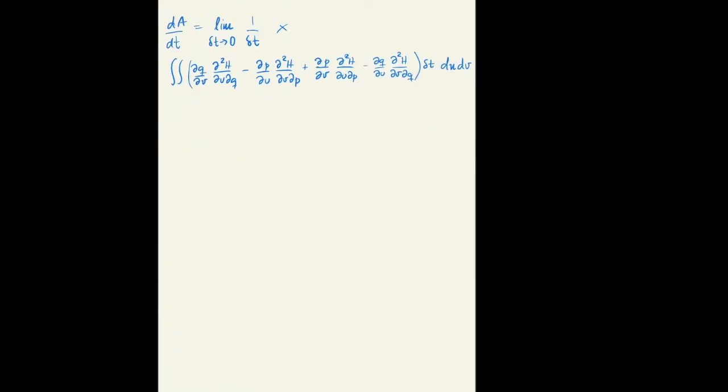Now we substitute the Jacobian at time T prime. This is the expression that you have for the area. Now the delta T cuts on both sides and then you get rid of the limit. Now we can prove that what is in this parenthesis is equal to zero.